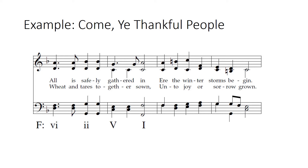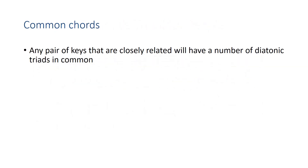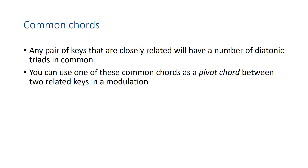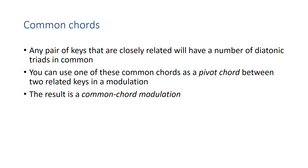Today we're going to talk about how you would analyze these kinds of passages with modulations in them. F major and C major are closely related keys, and any pair of closely related keys will have some triads in common. You can use one of these common chords as what we call a pivot chord, that pivots between those two related keys in the modulation — hence the name common chord modulation.